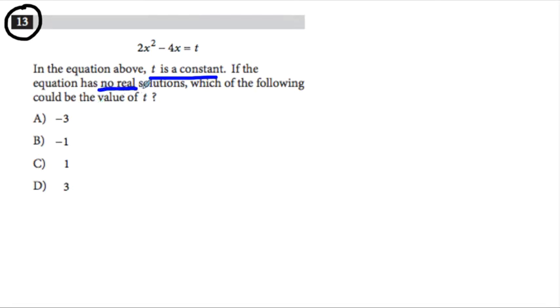And if the equation has no real solutions, which of the following could be the value of t? So that no real solutions has to play in my mind. This doesn't ask you to solve it. This doesn't ask you to do anything but find the value of t. Well, because it's a quadratic, I'd really like it in standard form if I'm going to be dealing with solutions. So I'm going to bring that t over and get it set equal to zero because then I might be able to do something more with it.